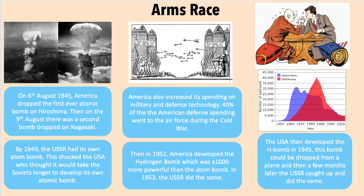40% of American defence spending went into the Air Force during the Cold War. Then in 1952, America developed the hydrogen bomb, which was a thousand times more powerful than the atom bomb. In 1953, the USSR did the same. The United States then developed the H-bomb in 1945, which could be dropped from a plane, and a few months later the USSR caught up and did the same. This is known as the arms race of the Cold War.